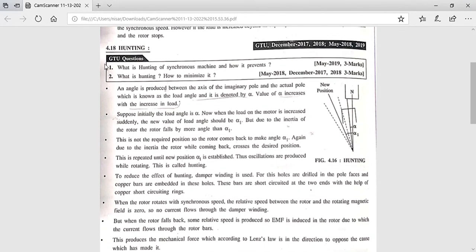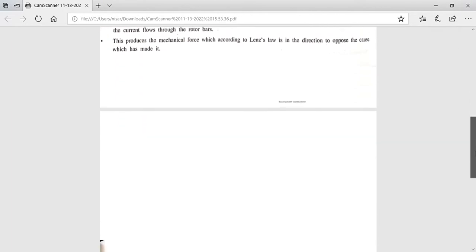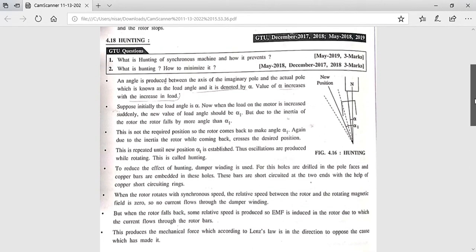What is hunting in synchronous motor? What is happening in hunting? We talk about the load angle. The load angle is produced between the axis of the imaginary pole and the actual pole. The imaginary pole is on the armature, and the actual pole is on the field where the rotor is rotating.